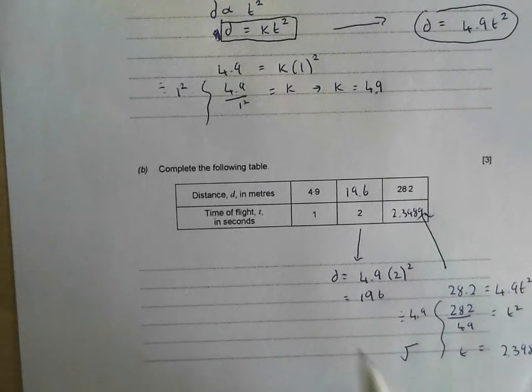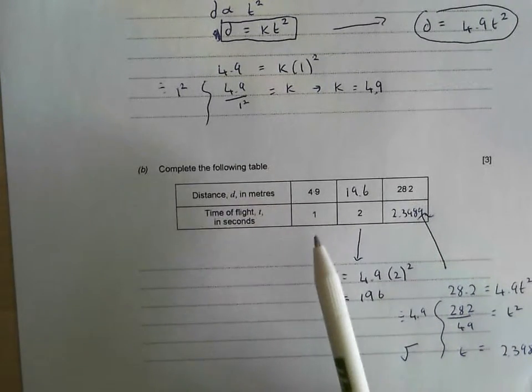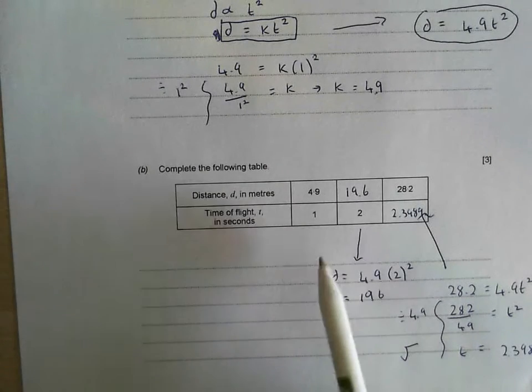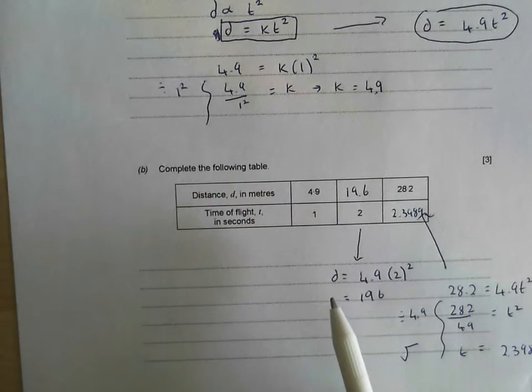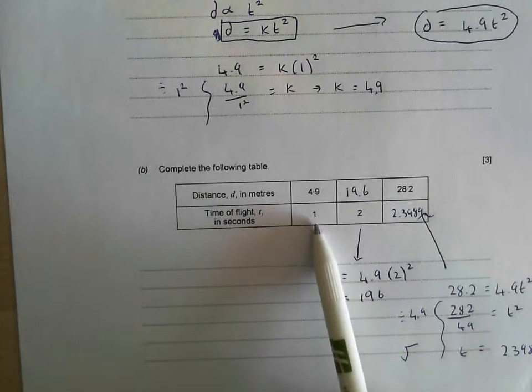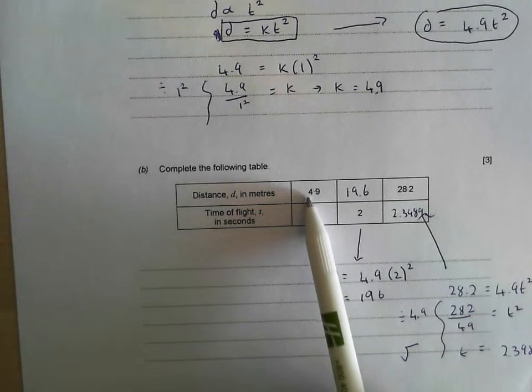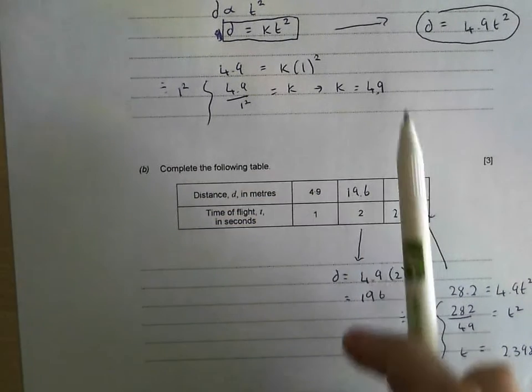And let's just check that actually makes mathematical sense. So it's directly proportional to. So as they go up, as t goes up, we'd expect distance to go up. Yep, that seems to be true. Look there. The time taken has doubled and the distance has gone up four times. So that fits in with the squared.